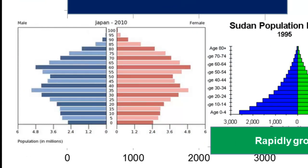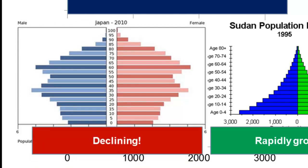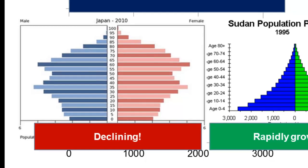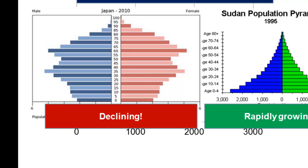By contrast, here is the population pyramid of Japan in 2010. It's much wider at the top than at the bottom — the Japanese population isn't narrow until you get up to age 80 to 85. This represents a long-lived population, but it also represents a population that is actually declining and will get smaller from generation to generation.